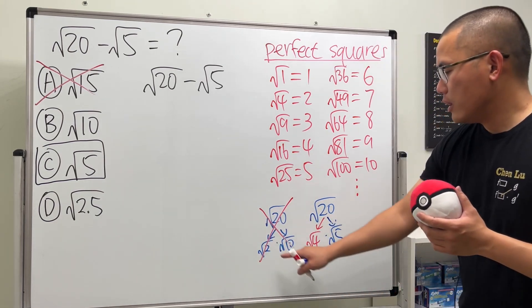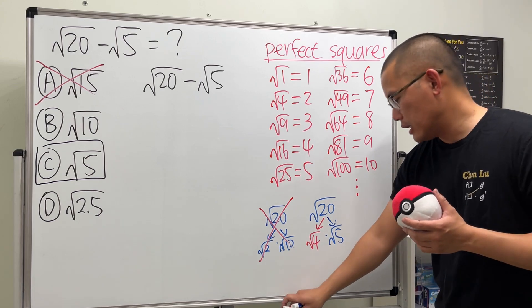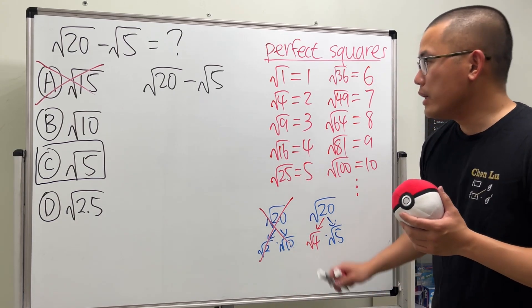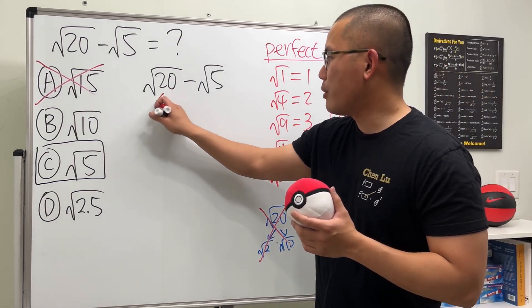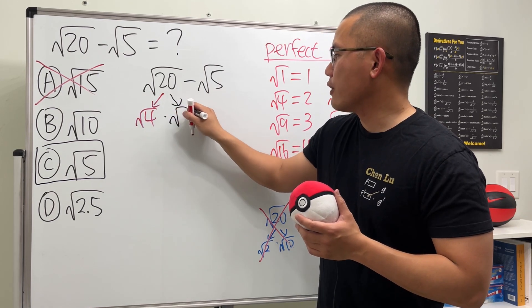Even though square root of 2 times square root of 10 is square root of 20, but it does not help us. So, with that being said, we are going to go back here and then break this apart. Square root of 4 times square root of 5.